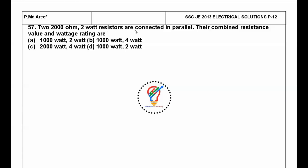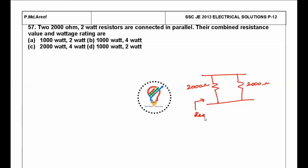The next question: two 2000-ohm, two-watt resistors are connected in parallel — find the combined resistance value and wattage. Here we have two resistances connected in parallel, both 2000 ohms. The equivalent resistance R_eq = R1×R2 / (R1+R2), which gives 1000 ohms.